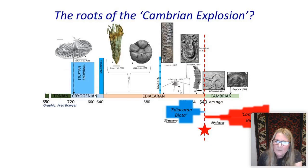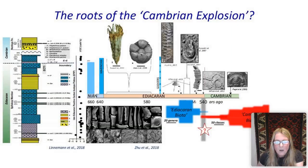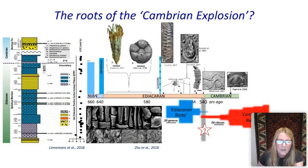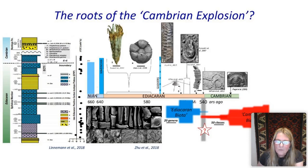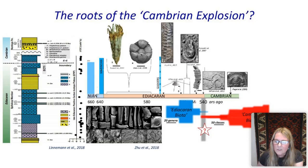Traditionally, we've thought of the Ediacaran biota as being very separate from the Cambrian biota and separated by a mass extinction. However, two new lines of evidence have suggested this story is far from clear. New ash bed dates from Namibia suggest that terminal Ediacaran rocks are not 541 million years old as previously thought, but at least 2 million years younger — we now have ash beds at 539 million years old, extending the Ediacaran biota into rocks previously thought to be Cambrian age.